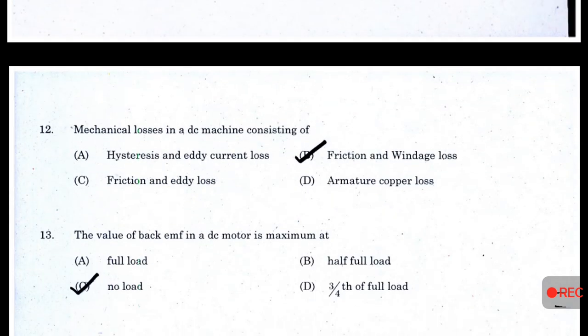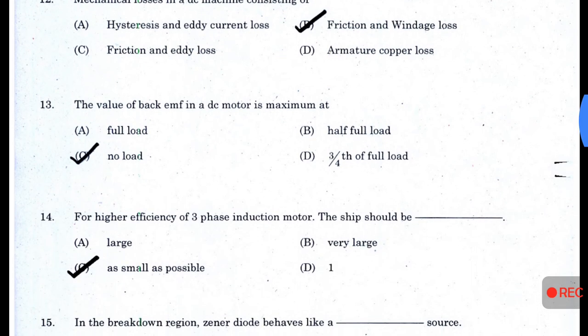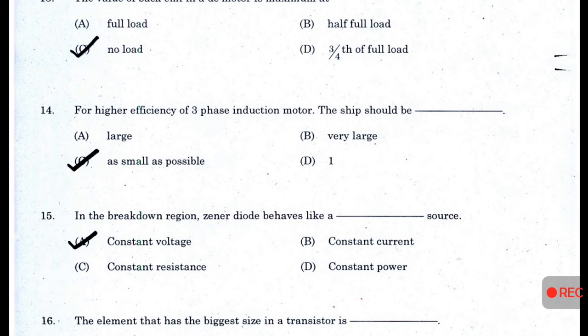Mechanical losses in a DC machine consist of — answer B — friction and windage loss. The value of back EMF in a DC motor is maximum at no load. Answer C: for higher efficiency of a three-phase induction motor, the slip should be as small as possible.